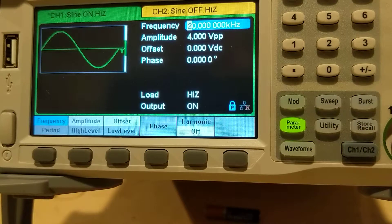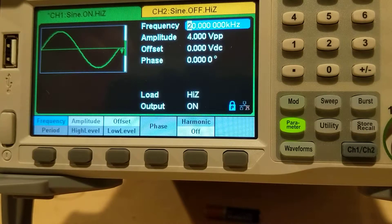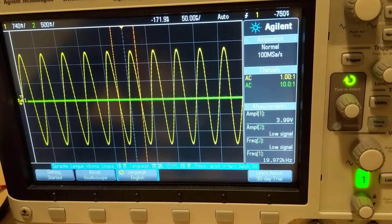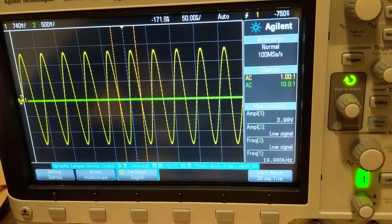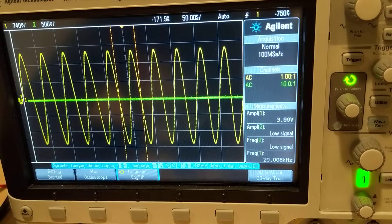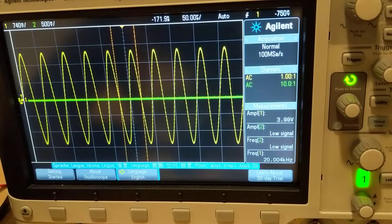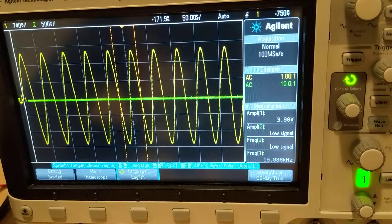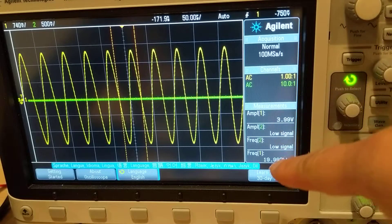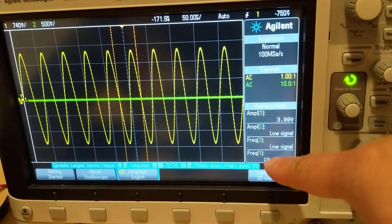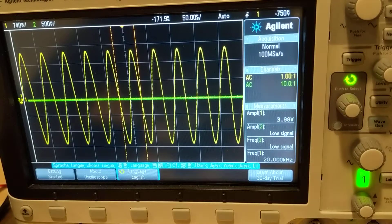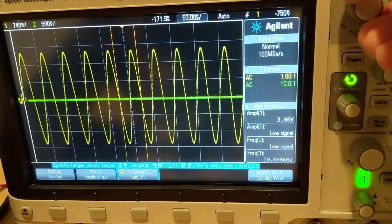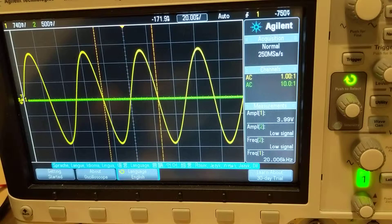Okay, the signal from the signal generator is fed into the scope and let's see the performance. Right now I'm showing 20 kilohertz at 4 volts peak-to-peak. It says here 20 kilohertz and 3.99 volts, pretty good. The signal is pretty nice. Let's go further, go to 1 megahertz.